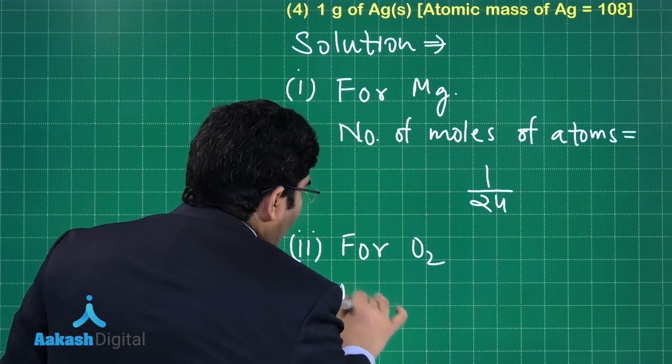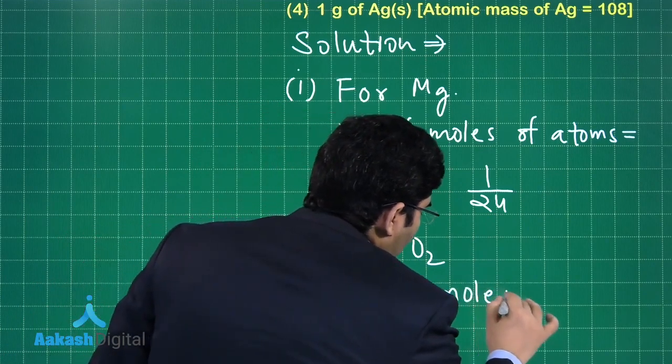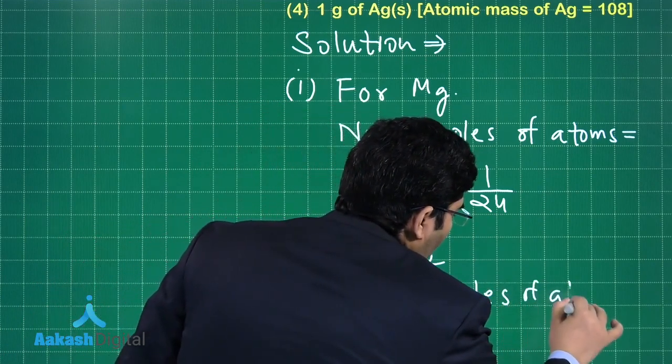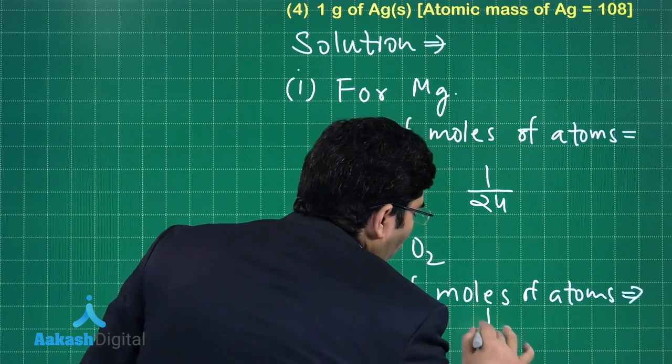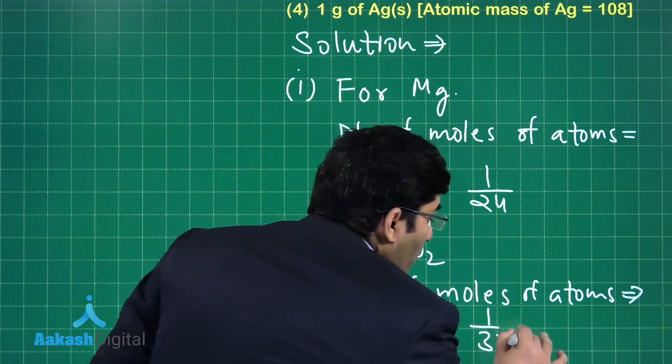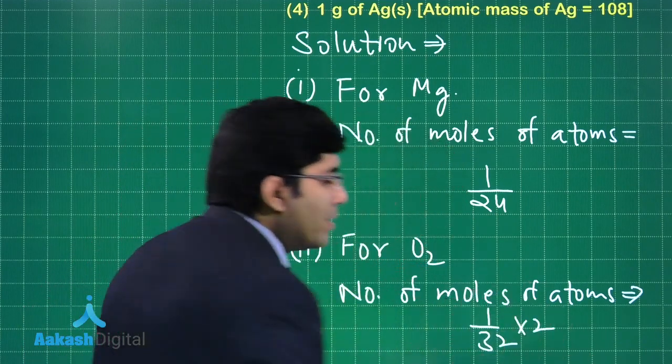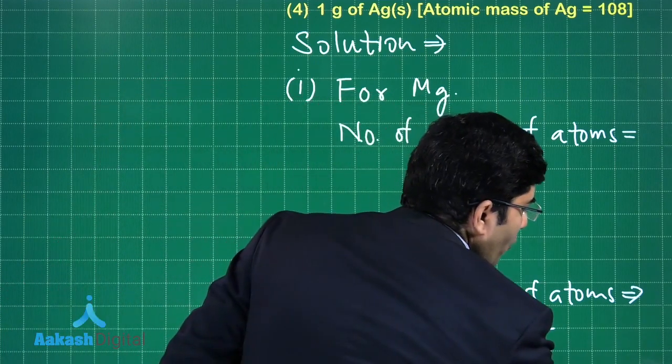Second one is oxygen. So for oxygen, the number of moles of atoms will be equal to 1 by 32, given weight upon molar mass. We have to multiply it by 2 because it is O₂. So this is the number of moles of atoms in the case of O₂.